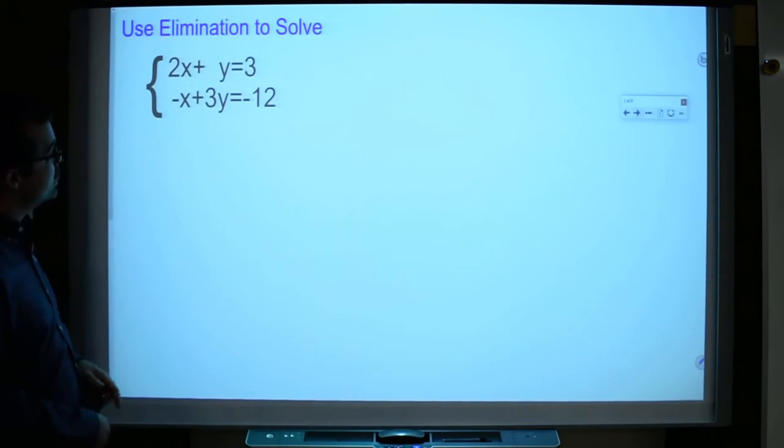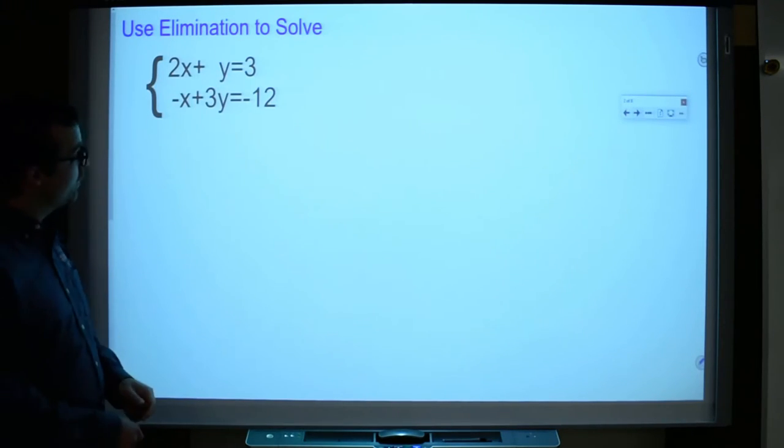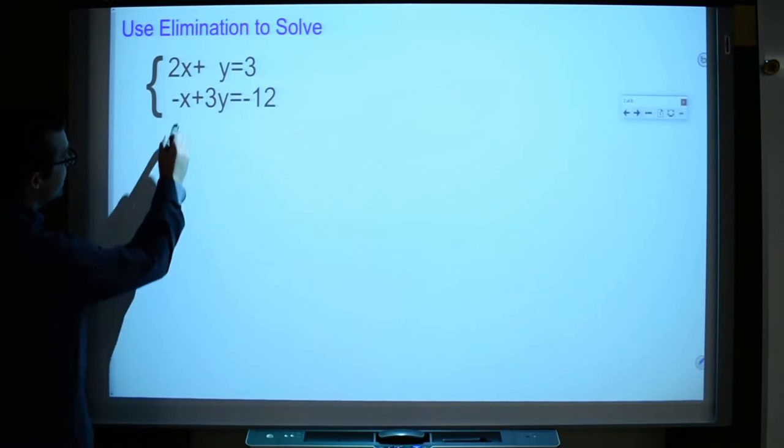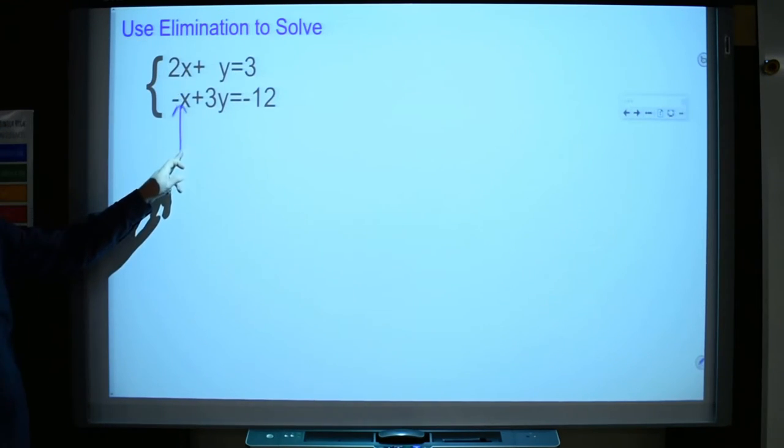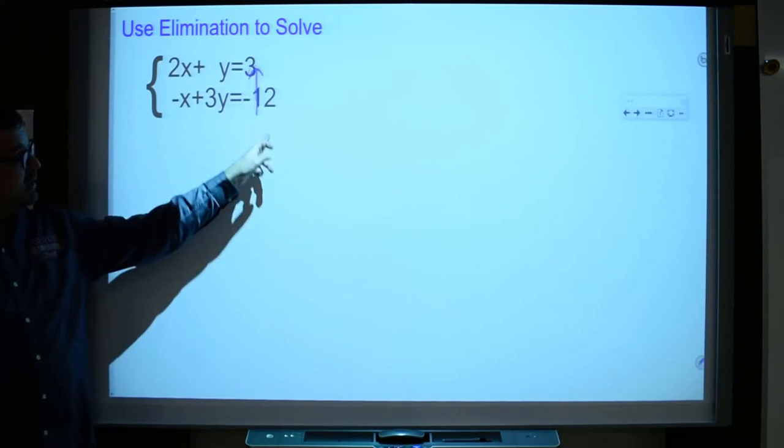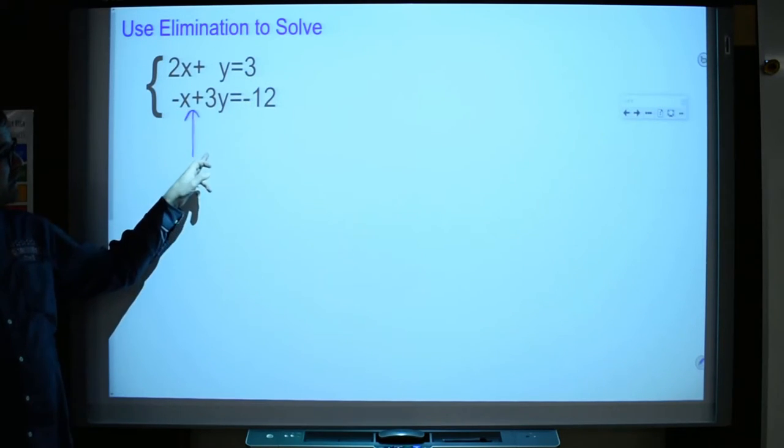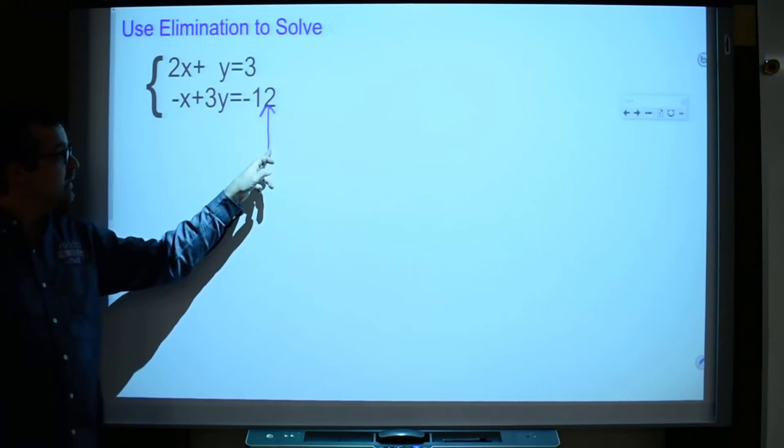All right, so first things first, you should have lined up your equal signs. I did my best to kind of actually do that for you already. Equal signs are lined up. Let me draw my arrow so you can see what I'm talking about. My x's are lined up, my x terms, my y terms, my equal signs, and my constants. And what's great is that they're both in standard form of ax plus by equals c, and that's good.